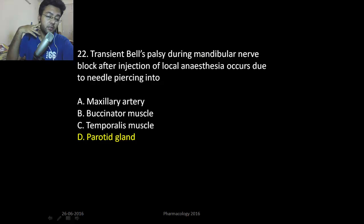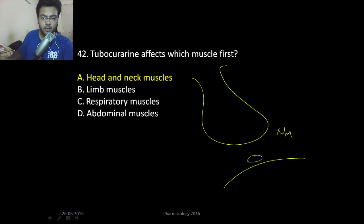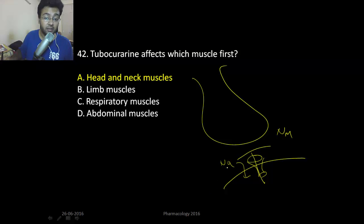Now let's discuss tubocurarine effects. At the neuromuscular junction, there are post-synaptic nicotinic channels. Tubocurarine comes and blocks the post-synaptic nicotinic channel, so there will be no more depolarization of the muscle and you'll have muscle relaxation. This makes it a non-depolarizing muscle relaxant because it completely blocks the post-synaptic nicotinic receptor without allowing sodium to enter.